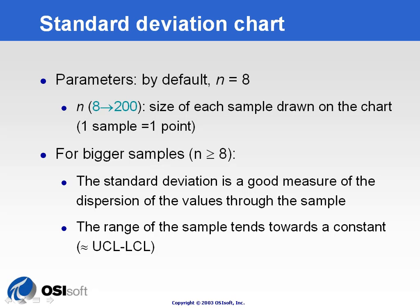Those two charts — the R-chart and the sigma chart — are really used in conjunction with the X-bar chart. So if you want to look at both types of variation in the process: a shift in the average or trend, or a constant trend but more or less variability in the process, you need to look at those charts side by side, because they're really giving you indication of different types of variation in your process.